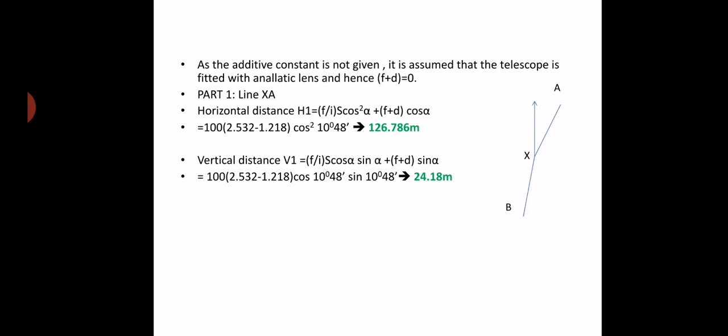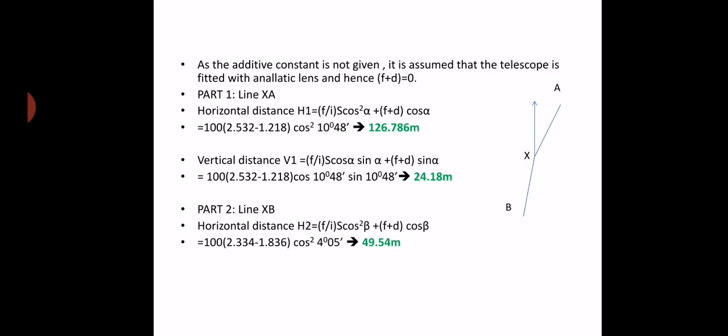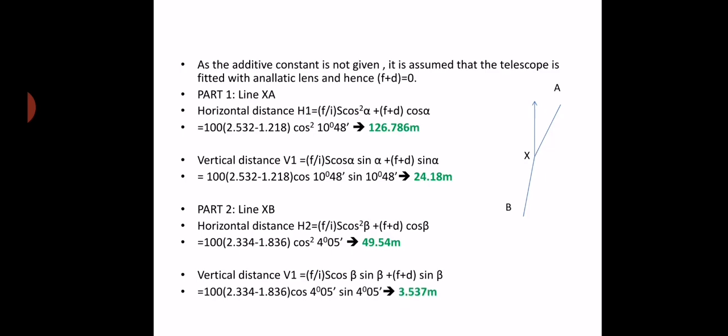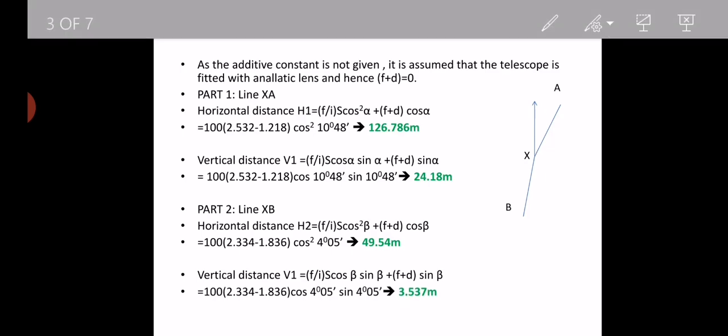Now moving to Part 2, which is XB. The horizontal distance H2 uses the same formula but with angle beta: H2 = (f/i) × s × cos²β + (f+d)cosβ. Substituting the values gives H2 = 49.54 meters. For the vertical difference V2 = (f/i) × s × cosβ sinβ + (f+d)sinβ, giving V2 = 3.537 meters.